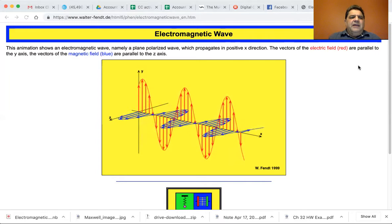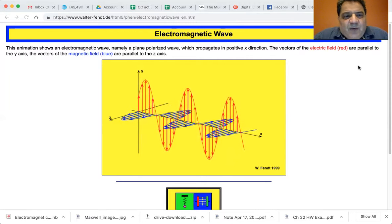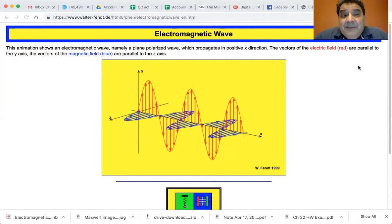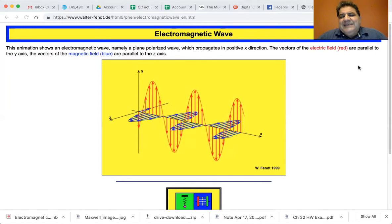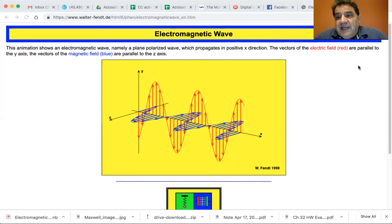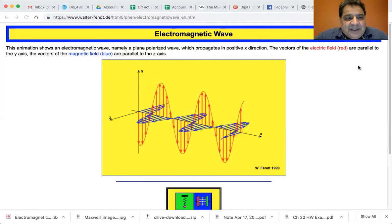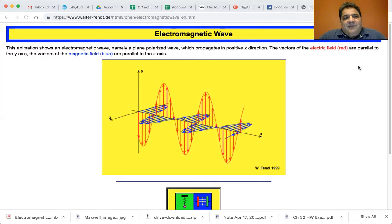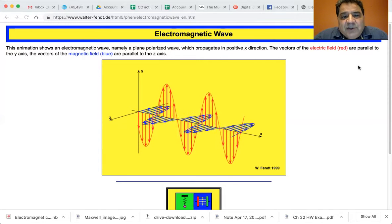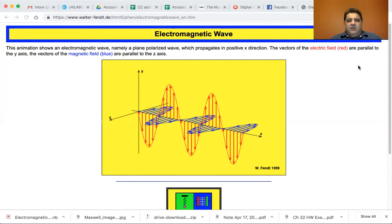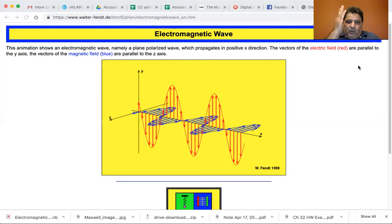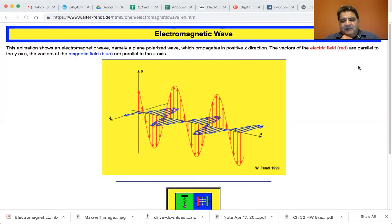This animation shows an electromagnetic wave, namely a plane polarized wave, which propagates in the X direction. The vectors of the electric field, red, are parallel to the Y axis. The vectors of the magnetic field, blue, are parallel to the Z axis. You can see when the red is positive, the blue is positive in the Z direction.